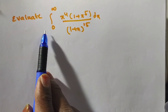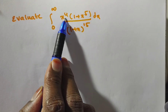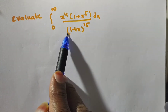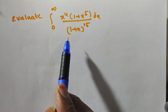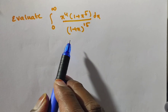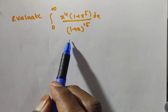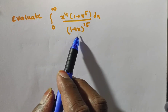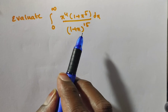Friends, the given problem is: evaluate the integral from 0 to infinity of x⁴(1 + x⁵) divided by (1 + x)¹⁵ dx. To solve this problem, first we have to identify whether this is a gamma function or beta function. There are no exponential terms, so obviously it is an application of the beta function.